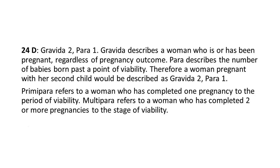Answer 24: D. Gravida 2, Para 1. Gravida describes a woman who is or has been pregnant, regardless of pregnancy outcome. Para describes the number of babies born past a point of viability. Therefore, a woman pregnant with her second child would be described as Gravida 2, Para 1. Primipara refers to a woman who has completed one pregnancy to the period of viability. Multipara refers to a woman who has completed two or more pregnancies to the stage of viability.